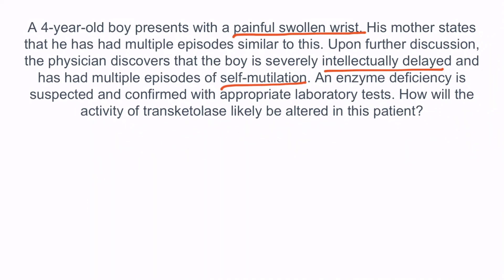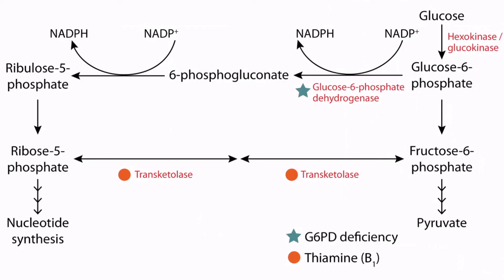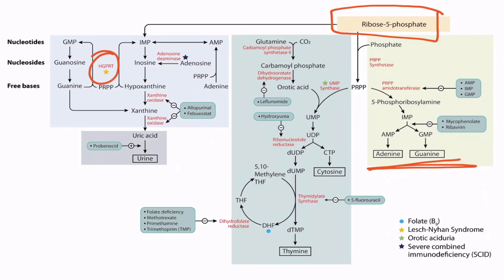Let's look at the overview figure to answer how transketolase activity would likely be altered. Lesch-Nyhan syndrome is due to a deficiency of HGPRT, meaning the patient has difficulty reusing purine bases. The boy compensates by upregulating the de novo purine synthesis pathway. Transketolase is an enzyme in the HMP shunt responsible for generating ribose 5-phosphate, which is needed for the de novo purine synthesis pathway. Since transketolase generates ribose 5-phosphate from fructose 6-phosphate, its activity would likely be increased, providing more ribose 5-phosphate to generate more purines and compensate for the defective purine salvage pathway.